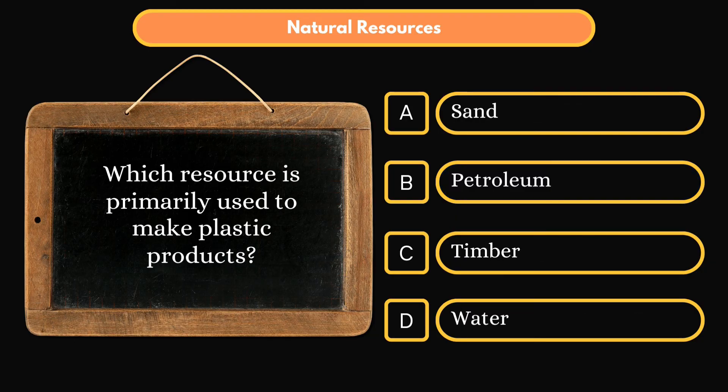Which resource is primarily used to make plastic products? Option A: Sand. Option B: Petroleum. Option C: Timber. Option D: Water. Correct answer is Option B: Petroleum.